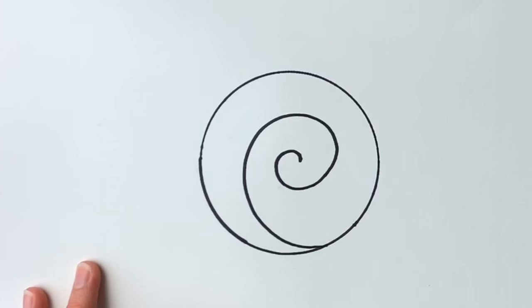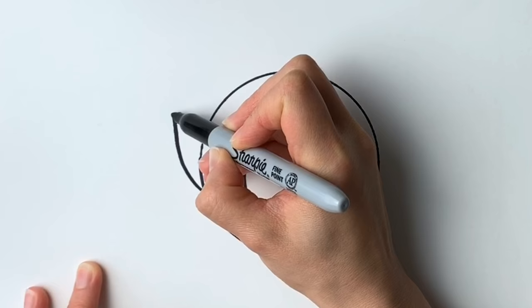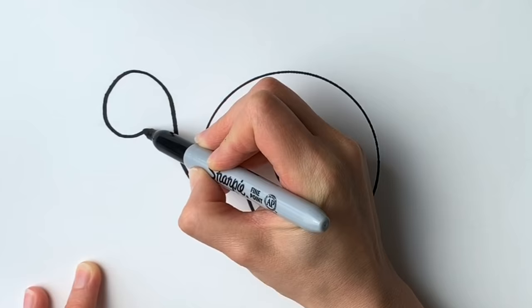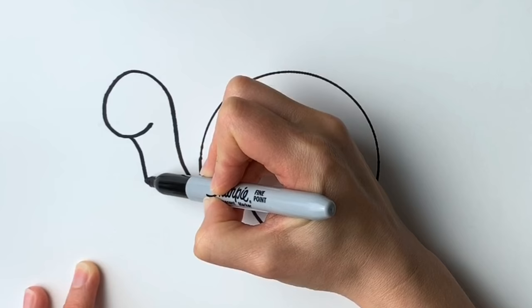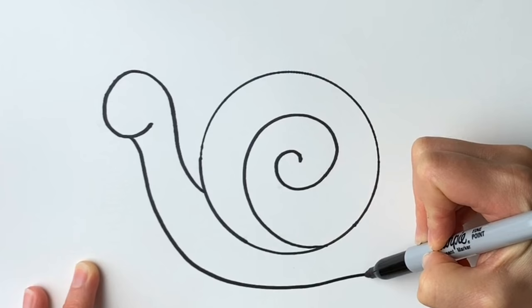Next we're going to be drawing the body of the snail so coming up like this. Draw a shape coming round. Tuck in like that then we're going to draw the rest of the body. Just bring it down all the way down along and then we're going to attach it to the circle.